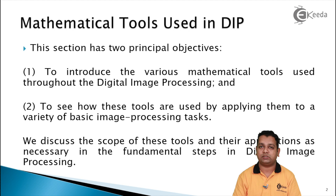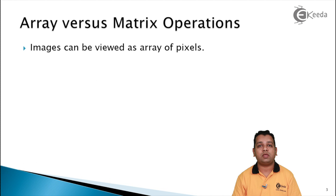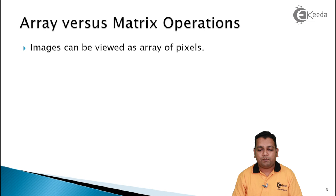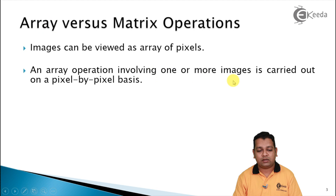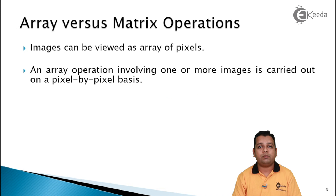Images can be viewed as an array of pixels. Array means group. The pixel is the basic entity in the image, just as the human body has basic entities — cells form tissues, tissues form organs, and organs form the body. Likewise, the basic entity is the pixel, and a group of pixels is nothing but the image. An array operation involves one or more images and is carried out pixel by pixel. If you have two input images and want some operation to result in a composite image, pixel by pixel operation within the input images is done — that is called an array operation.